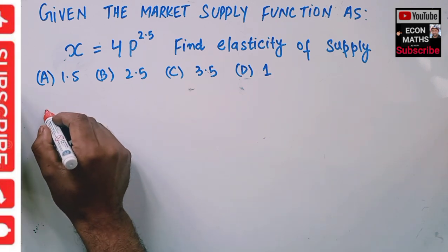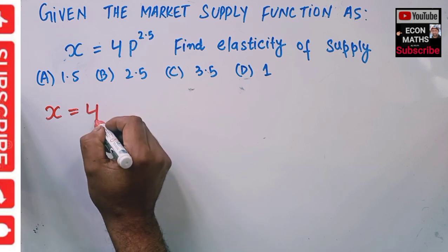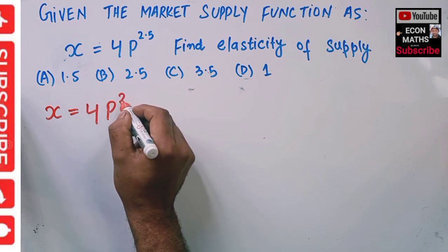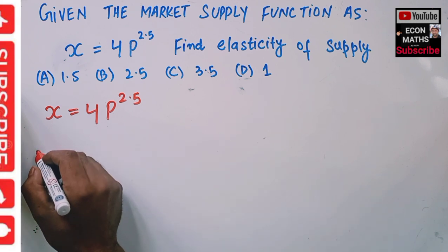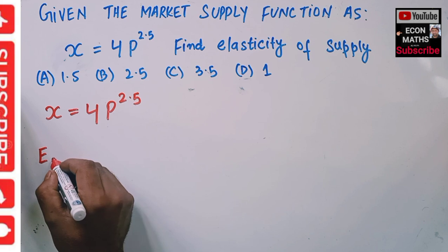So what we are being given is a supply function X = 4P^2.5. We need to find out the elasticity of supply. So elasticity of supply, denoted by E subscript S, is simply equal to the derivative of the supply function with respect to price.